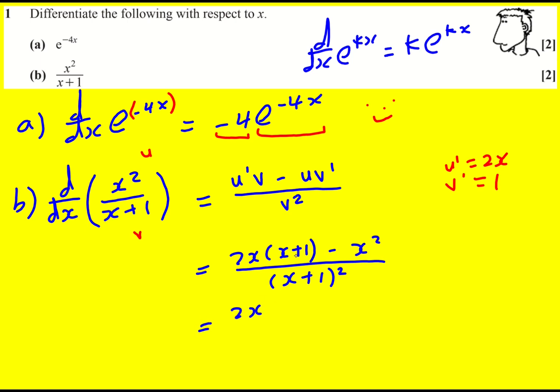We need to simplify it. So 2x squared plus 2x minus x squared all over x plus 1 squared.